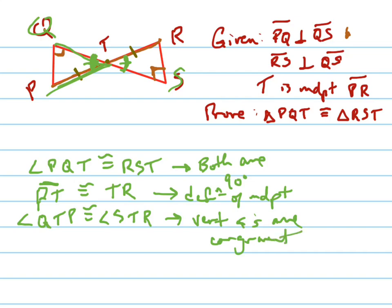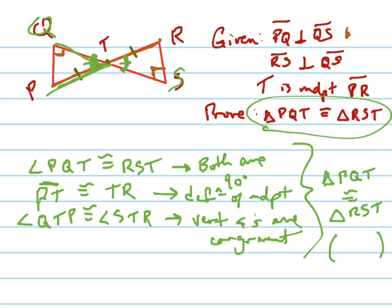So, all three of those things together give me that triangle PQT is congruent to triangle RST. And the reason, which I think they like, maybe put in parentheses or put underneath it, is angle, angle, side, A, A, S.